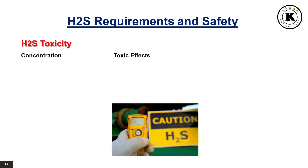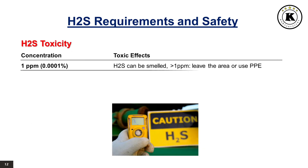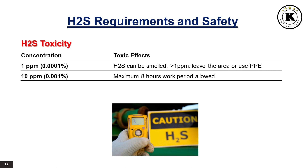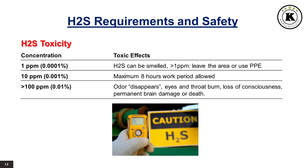H2S toxicity: At 1 ppm concentration (0.0001%), H2S can be smelled — if more than 1 ppm, leave the area or use PPE. At 10 ppm (0.001%), a maximum 8-hour work period is allowed. If the H2S concentration is more than 100 ppm (0.01%), the odor disappears, the eyes and throat burn, and there is loss of consciousness, permanent brain damage, or death.